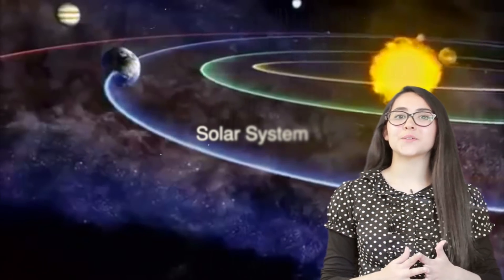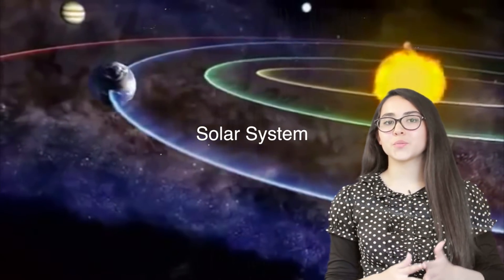Stars come in different sizes, colors and temperatures. The color of a star is determined by its temperature. The hottest stars are blue and the coolest stars are red. For example, our sun, the center of our solar system, is a yellow star of average temperature and size.